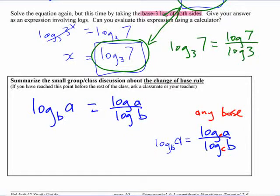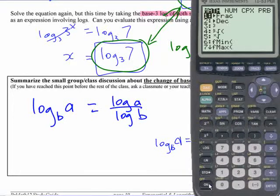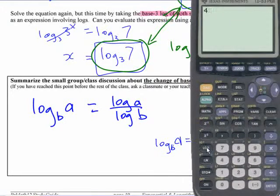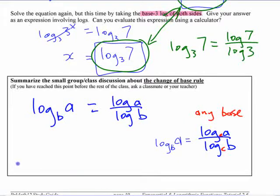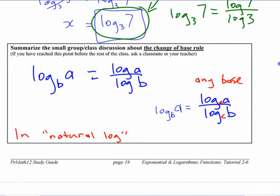This might be a time to introduce this other base you have on your calculator, base e. We're going to look at later what base e is, what that value of that number is. But you notice, here you have log and you have 10 to the x. Here you have LN and you have e to the x. LN stands for, I don't know why it's LN and not NL, but it's natural logarithm. Maybe it's French, log naturel or something like that, but that's why they write it.